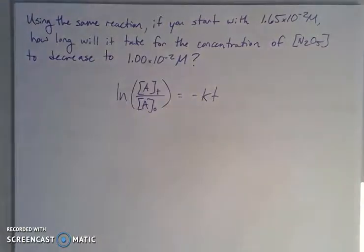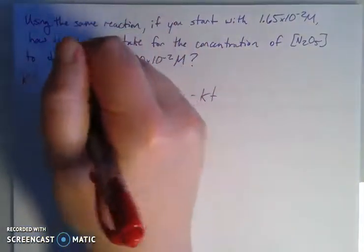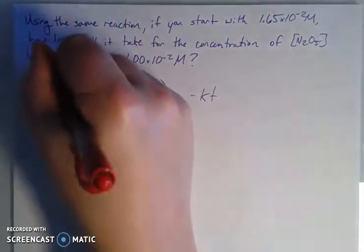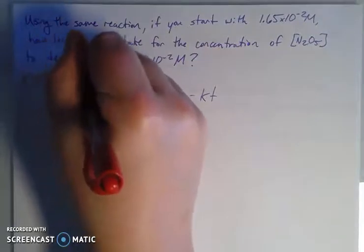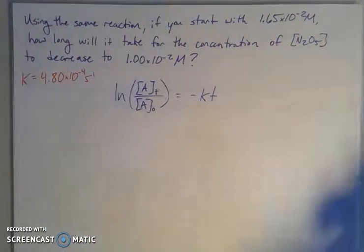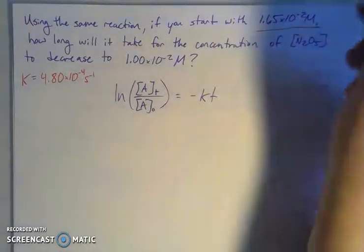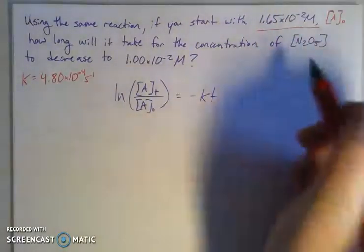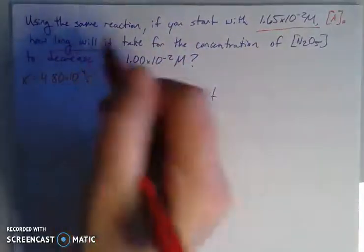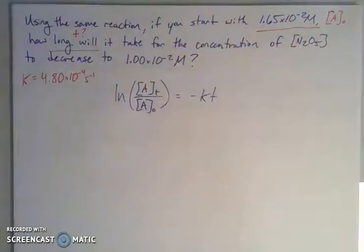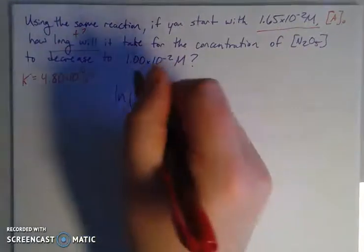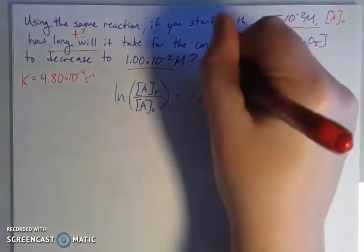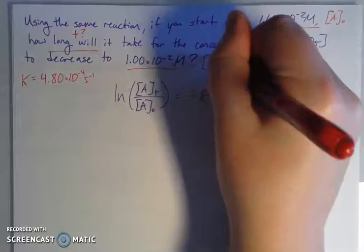From the equation, K is given in the prior question - 4.80×10^-4 per seconds. This is my initial concentration, my A at time zero. It's asking how long will it take, so I'm looking for T. This is my concentration at time T.